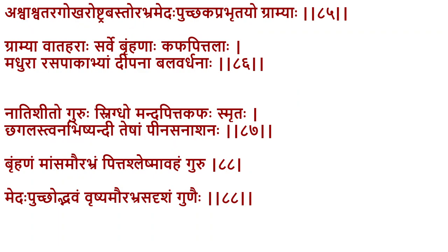Domesticated animals — ashwa (horse), ashwadara, gok (cow), kharra (donkey), ustra (camel), basta, urabhra, medha — were all used as food. In general, gramya (domesticated) animals are vata-haraha, brumana, kapha-pitta-laha, madhura in rasa and paka, deepana, and balavardhana. Majority of domesticated animals would have vata-hara and brumana qualities and increase kapha and pitta.